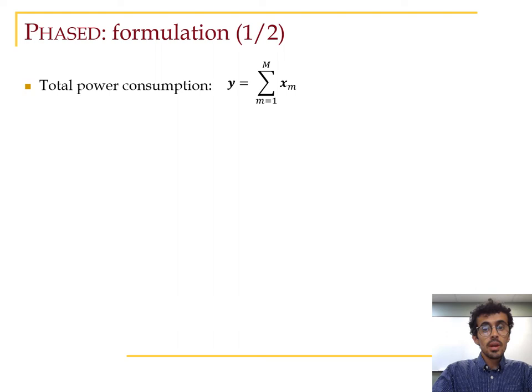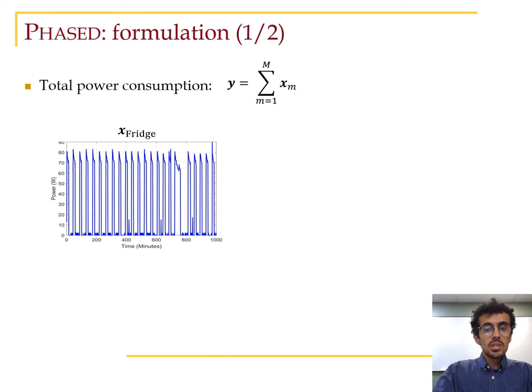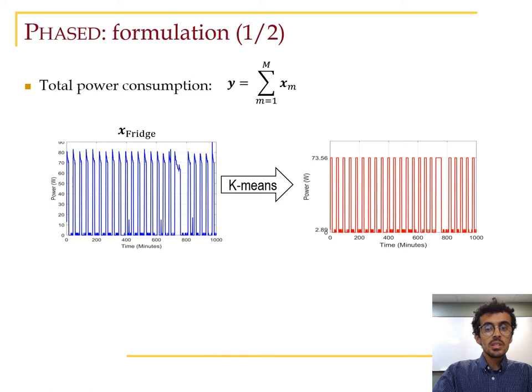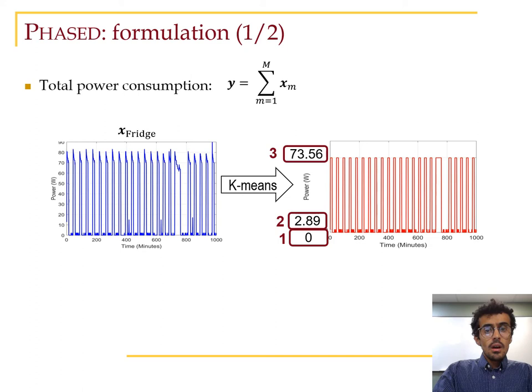In energy disaggregation, we are given the aggregated power y and we wish to estimate the appliance level series x_m for m appliances. Here we plot the fridge's power, which is one example of the variables x_m. This is a continuous signal. However, it can be well approximated by quantization into a few discrete values. For example, if we apply k-means with three clusters and plot the corresponding centroid at each time instant, we get the red signal. These centroids are the power levels that the fridge consumes at different states, on, off, and so on.